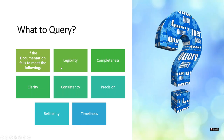What do we query? We query if there's a problem with legibility, completeness, documentation clarity, consistency, precision, reliability, and timeliness. The documentation must be as perfect as we can get it, and the query is the tool that we use.